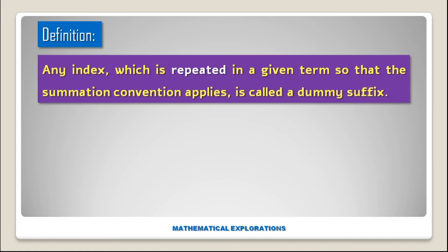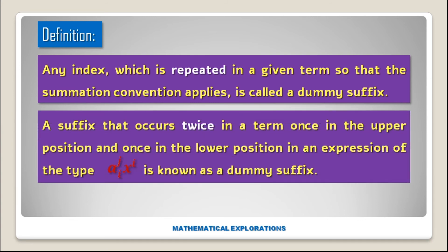Definition: Any index which is repeated in a given term so that the summation convention applies is called a dummy suffix. In other words, a suffix that occurs twice in a term — once in the upper position and once in the lower position — in an expression of the type aᵢⱼxⁱ is known as a dummy suffix.